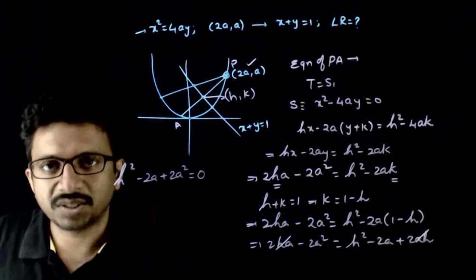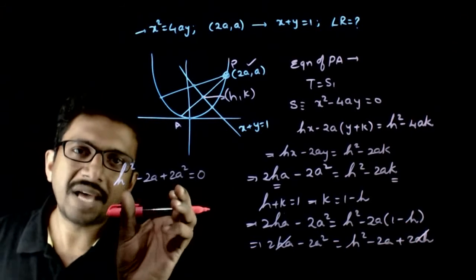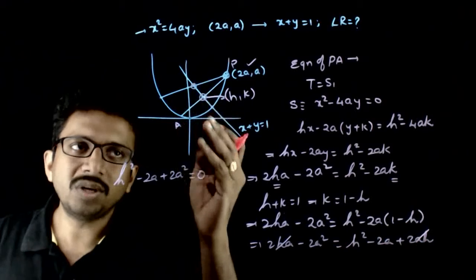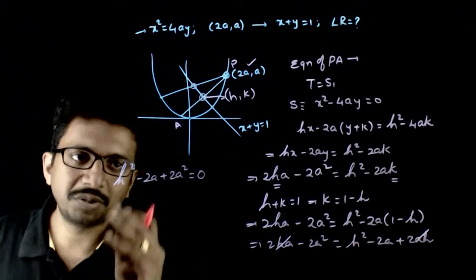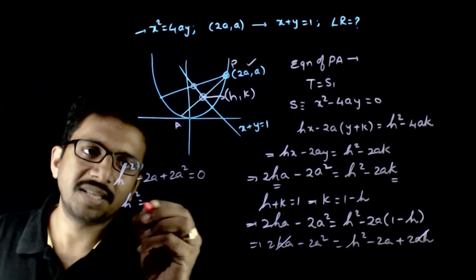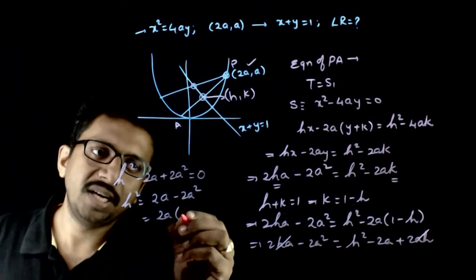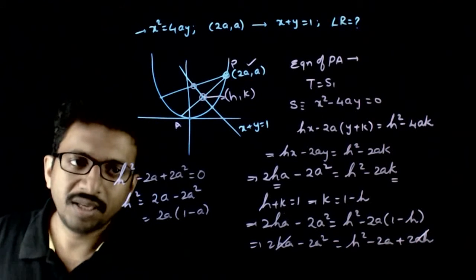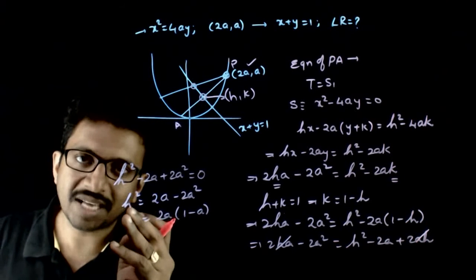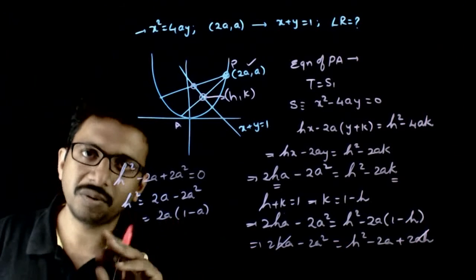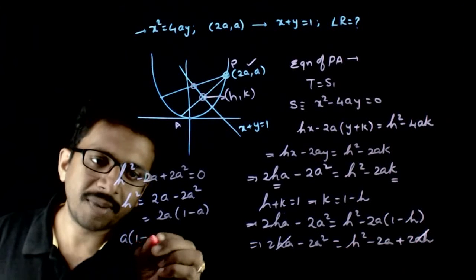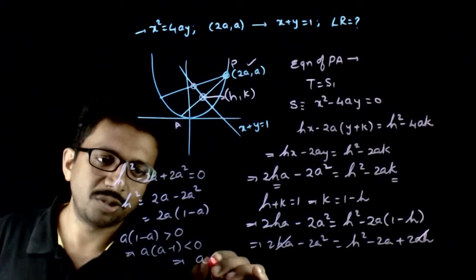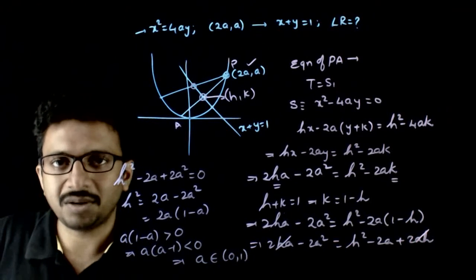This equation must have two distinct roots, because it is given that there are two chords, meaning we need two values for h. Rearranging: h² = 2a - 2a² = 2a(1 - a). For h to have two values, h² must be positive. So a(1 - a) must be greater than 0, which means a(a - 1) must be less than 0. This implies a belongs to (0, 1).